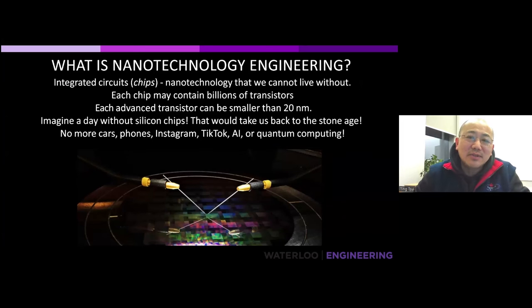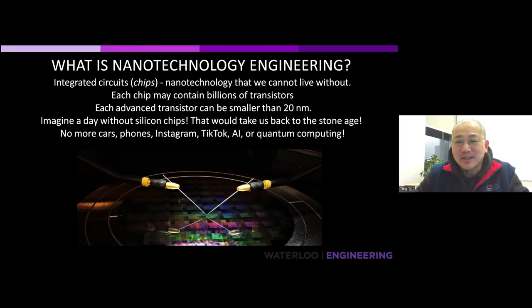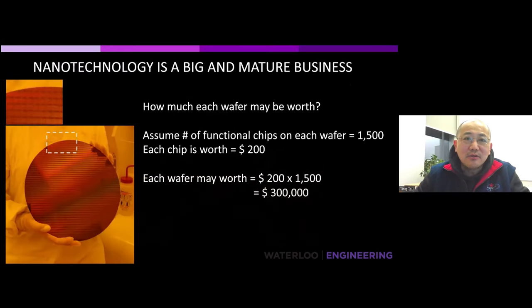Another key example is integrated circuits — chips. Each chip may have billions of transistors, each smaller than 20 nanometers. These chips are everywhere: in cell phones, computers, LED light controllers, and cars. Without silicon chips, we'd have no cars, no phones, no Instagram, no TikTok. Technologies like AI and quantum computing also depend on chips. This is a critically important technology developed through nanotechnology engineering.